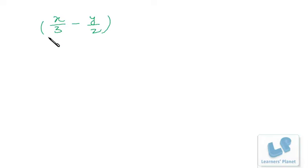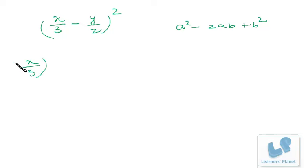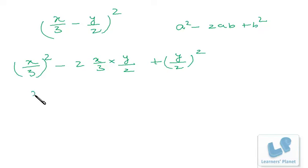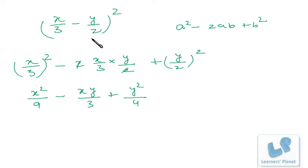For (x/3 - y/2)², we use (a-b)² = a² - 2ab + b². Squaring (x/3) gives x²/9; minus 2·(x/3)·(y/2) = xy/3; plus (y/2)² = y²/4. So the expansion is x²/9 - xy/3 + y²/4.